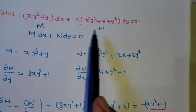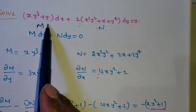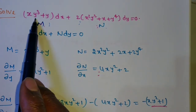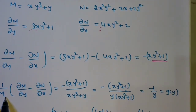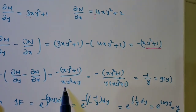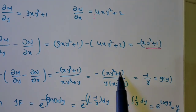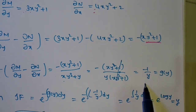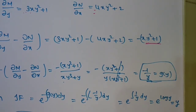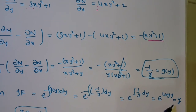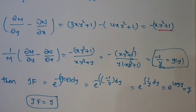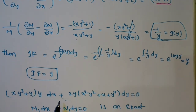Since dividing by M gives g(y) = −1/y, the integrating factor is e to the power of integral of minus g(y) dy = e^(integral 1/y dy) = e^(log y) = y. So the integrating factor is y.